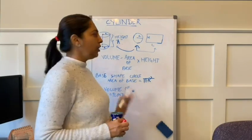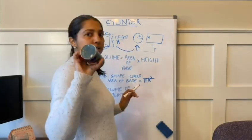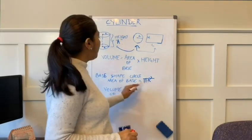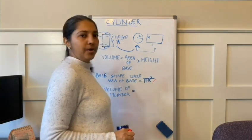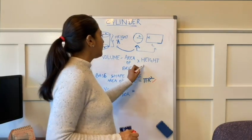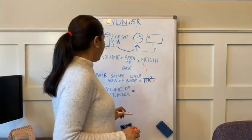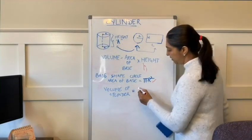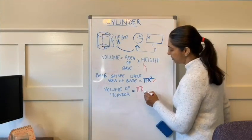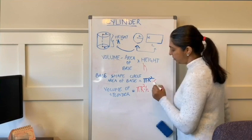So in order to calculate the volume, all we need to do is take the area of the circle, which is given by the formula of pi times r squared. And we know the height is given by h. And this will bring us to the volume of the cylinder being pi r squared times h.